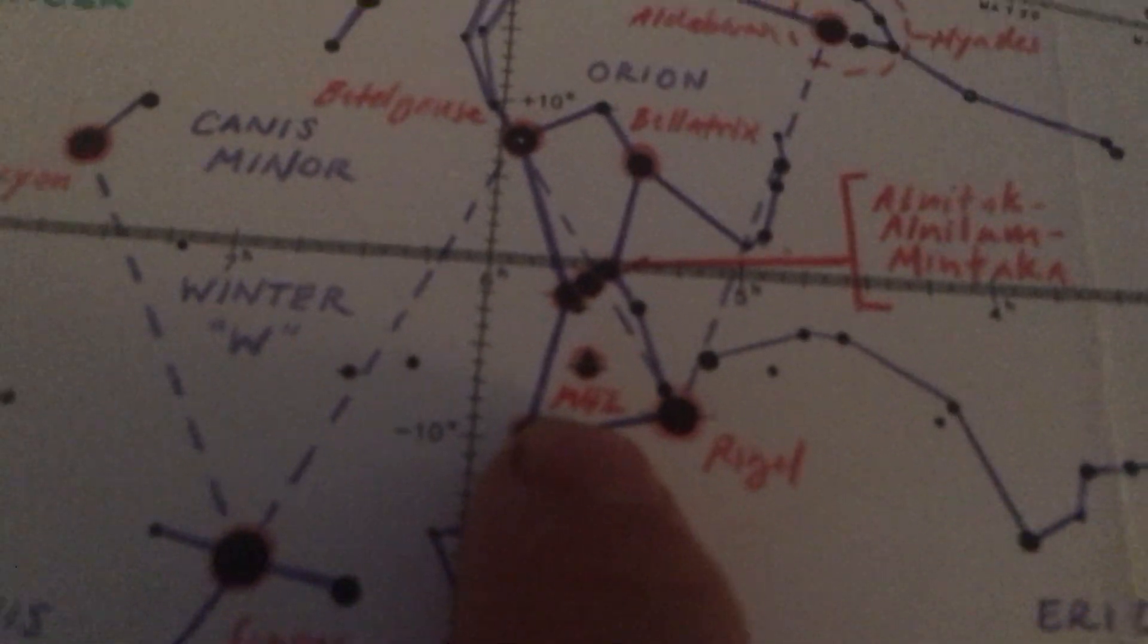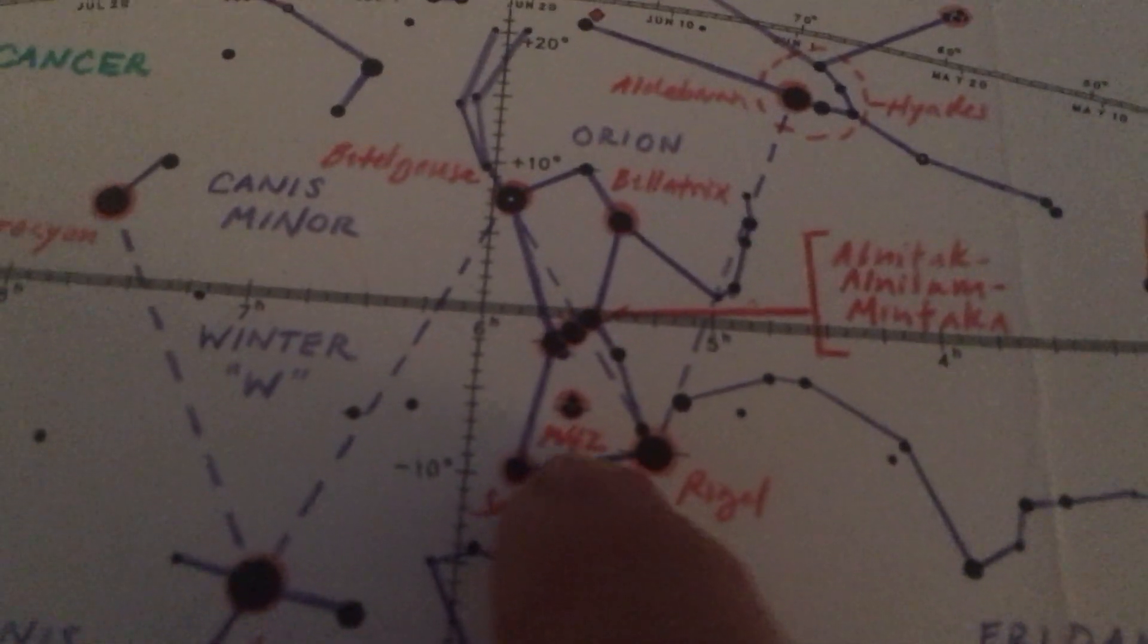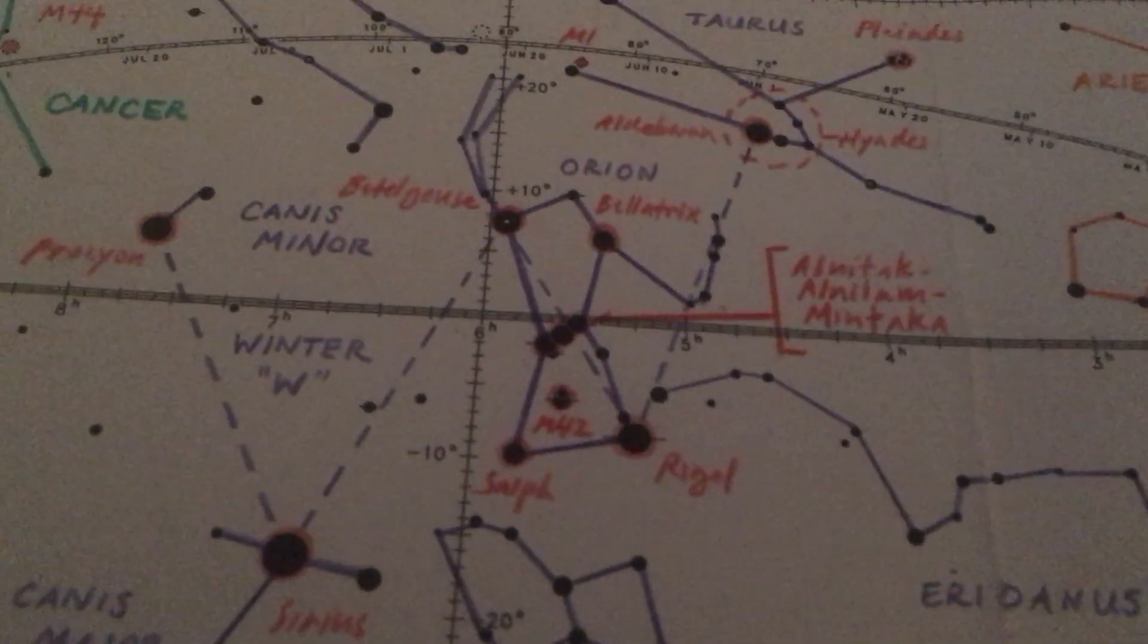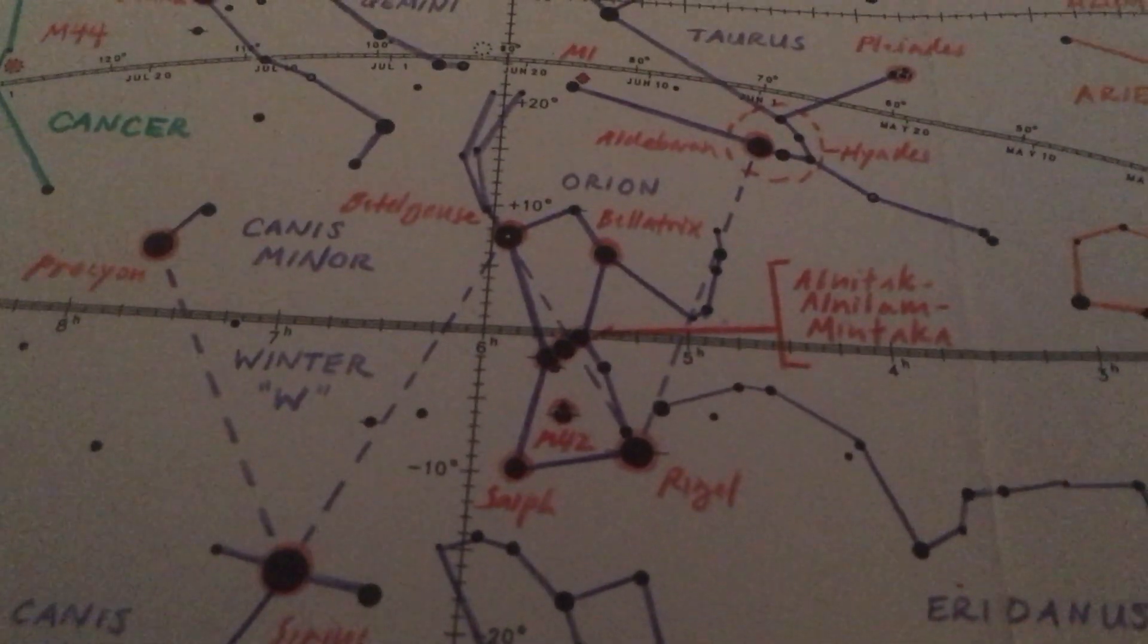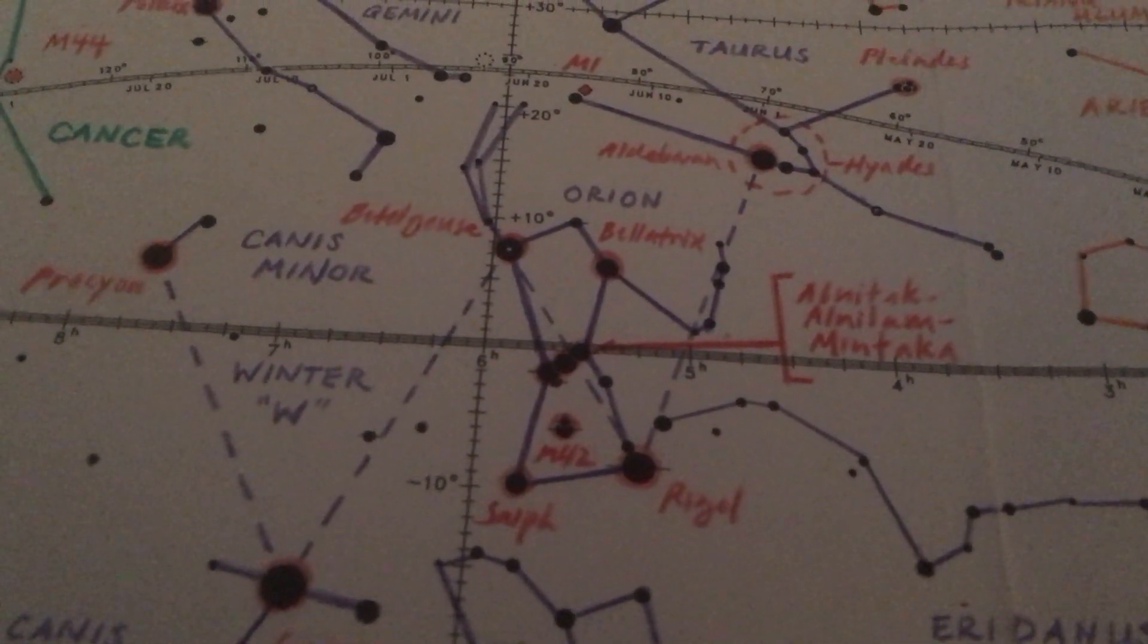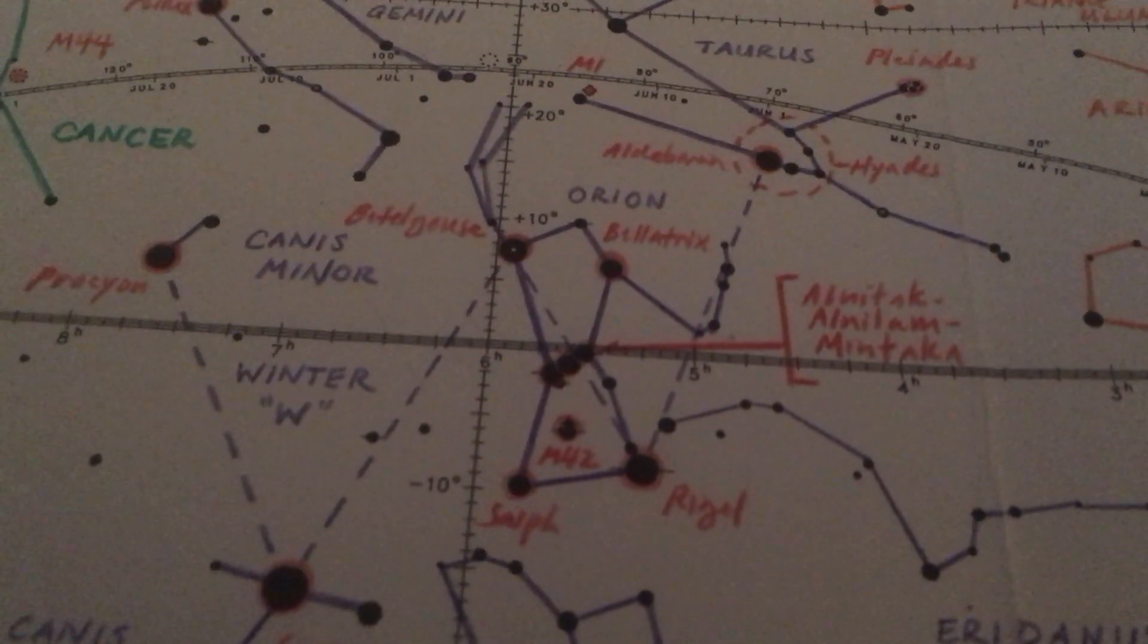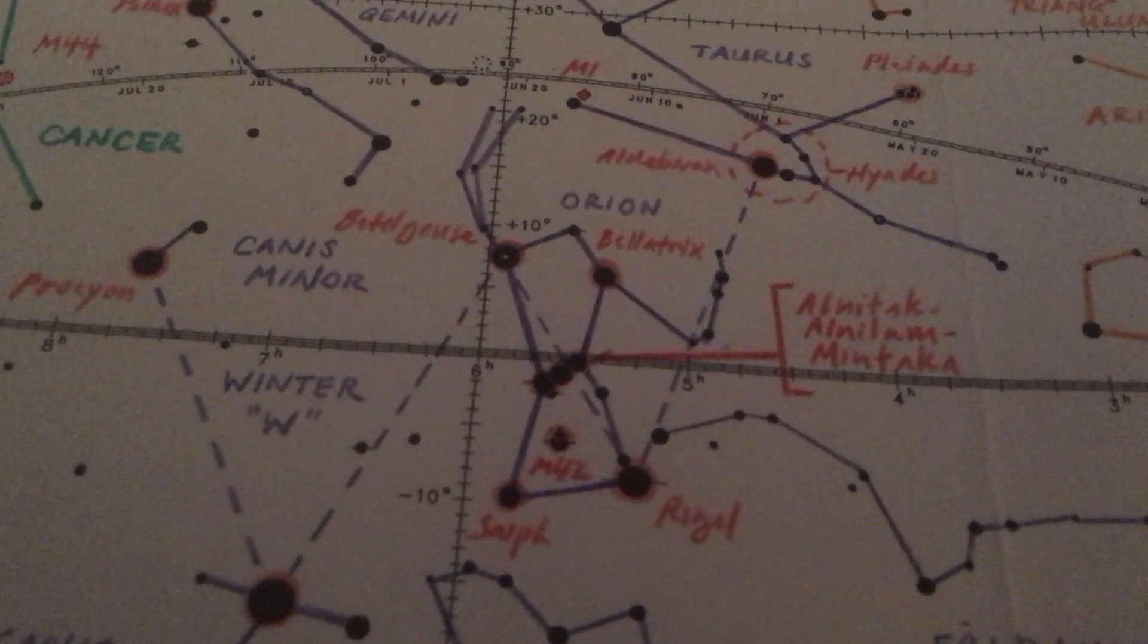Finally, hanging below the hunter's belt, we have the sword. This is the home of M42, the Orion Nebula, a beautiful stellar nursery where you can see baby stars being born with the naked eye. So there's a whole lot here in Orion.